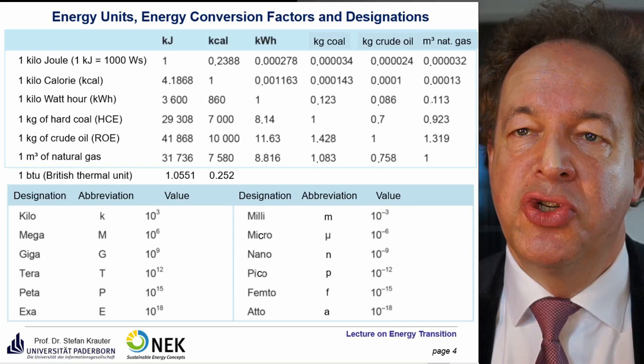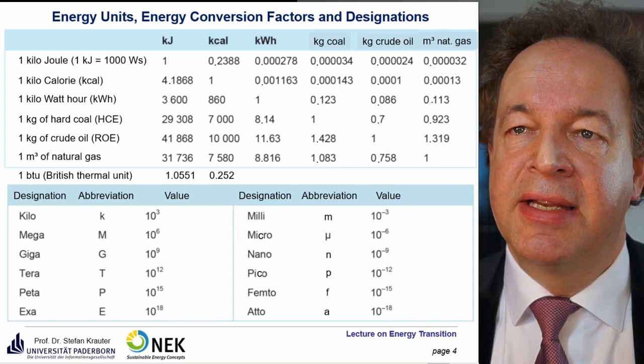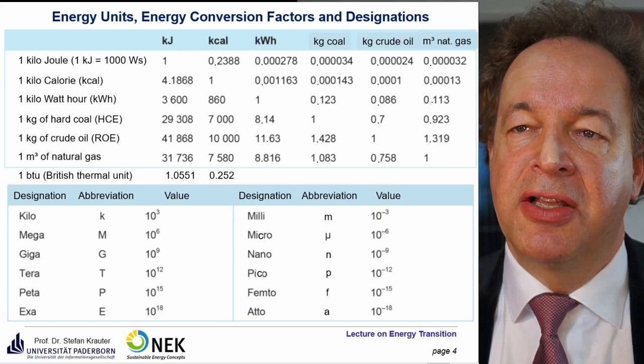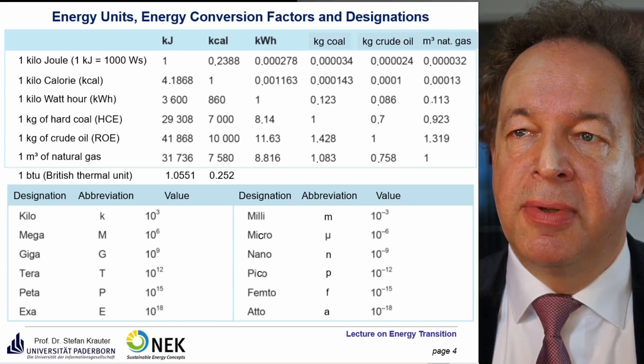Let's talk about the units of energy. The SI unit is the joule; one kilojoule is 1000 watt-seconds. Formerly, calories were used — one kilojoule is 0.2388 kilocalories. In terms of kilowatt hours, one kilowatt hour equals 0.000278 kilojoules — it's a relatively large unit.